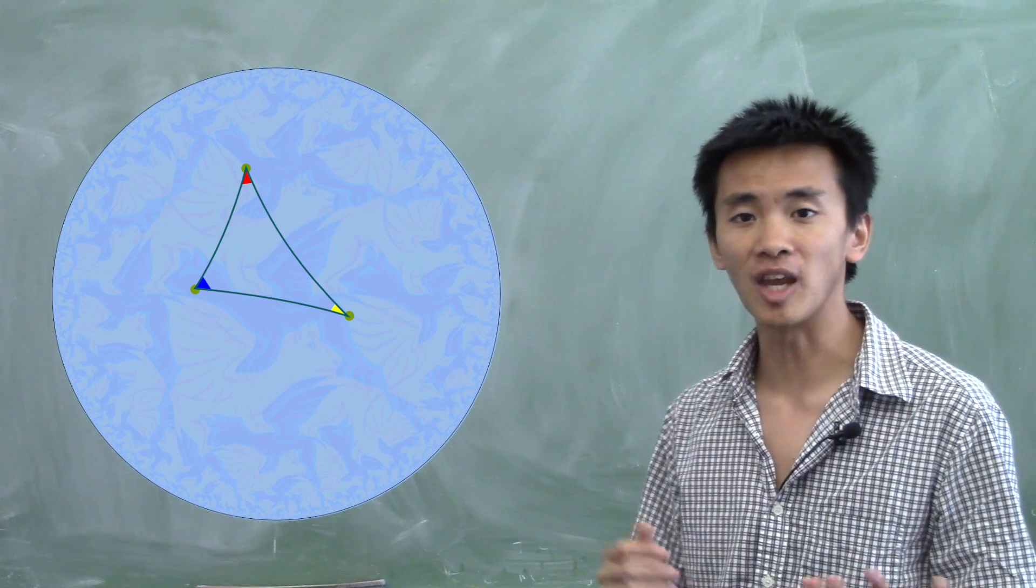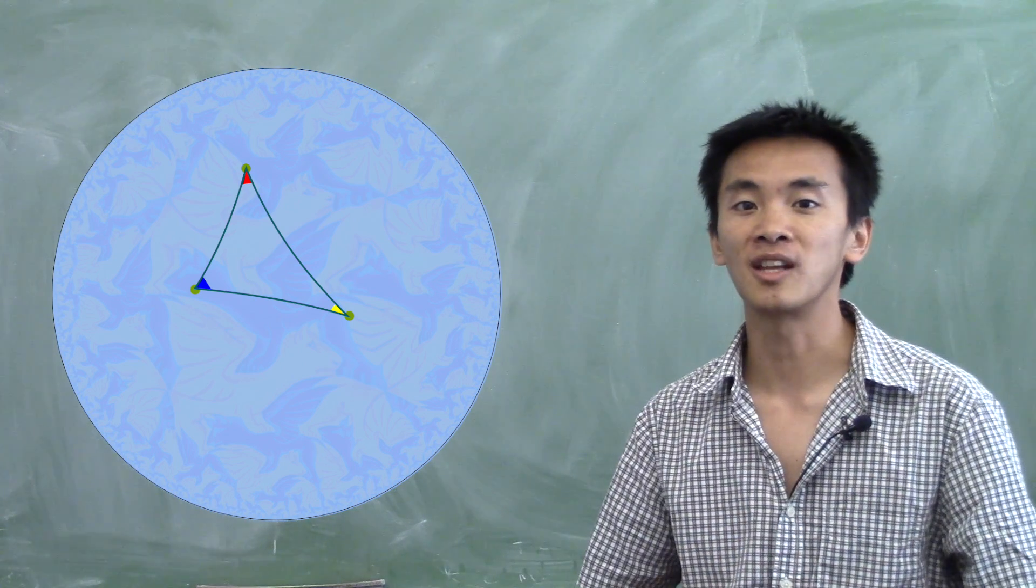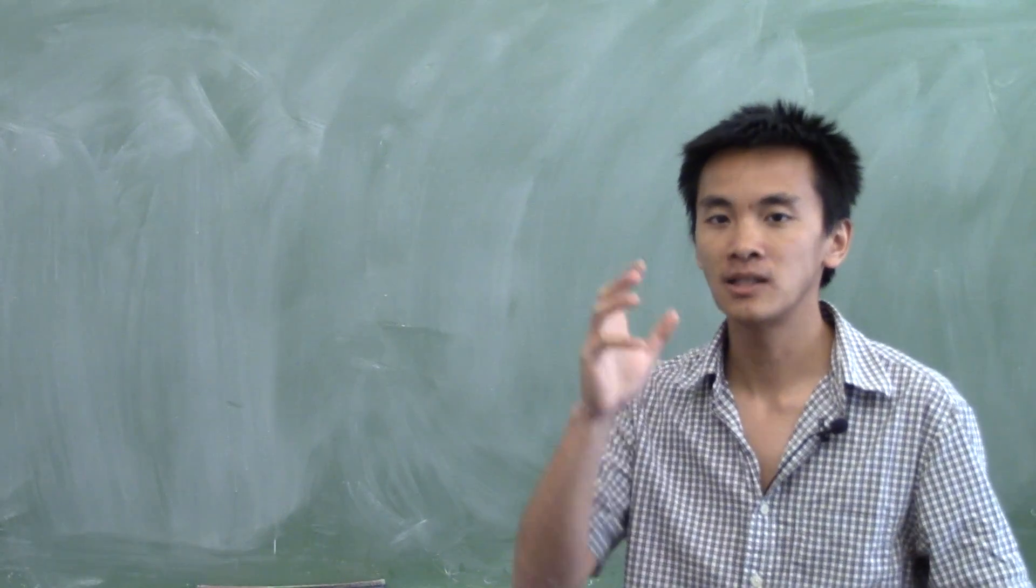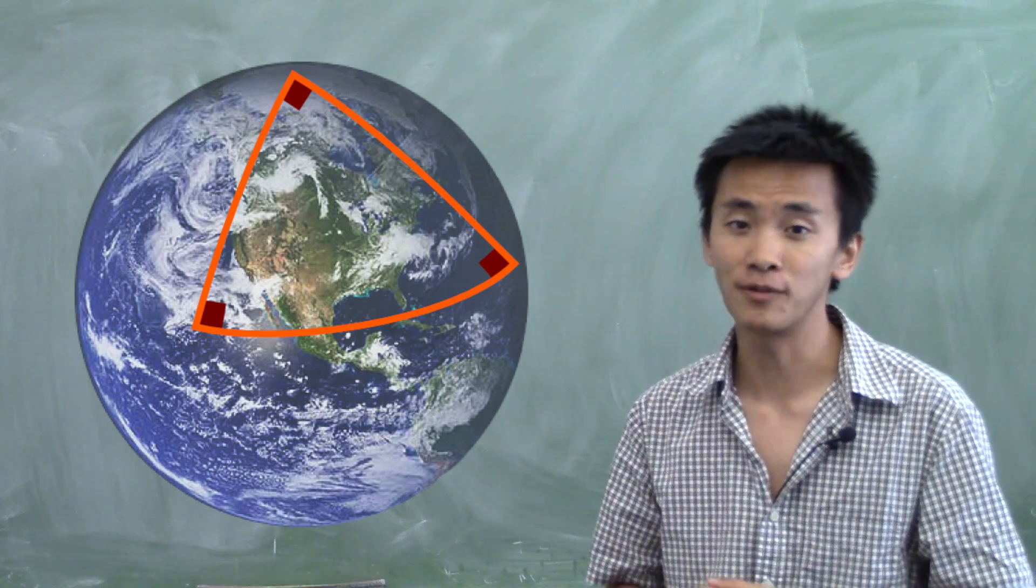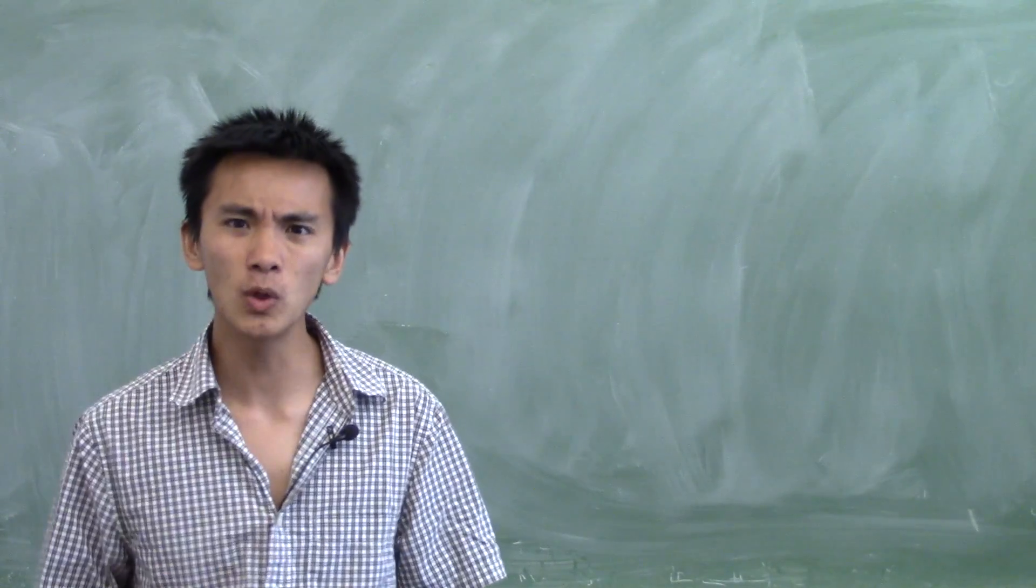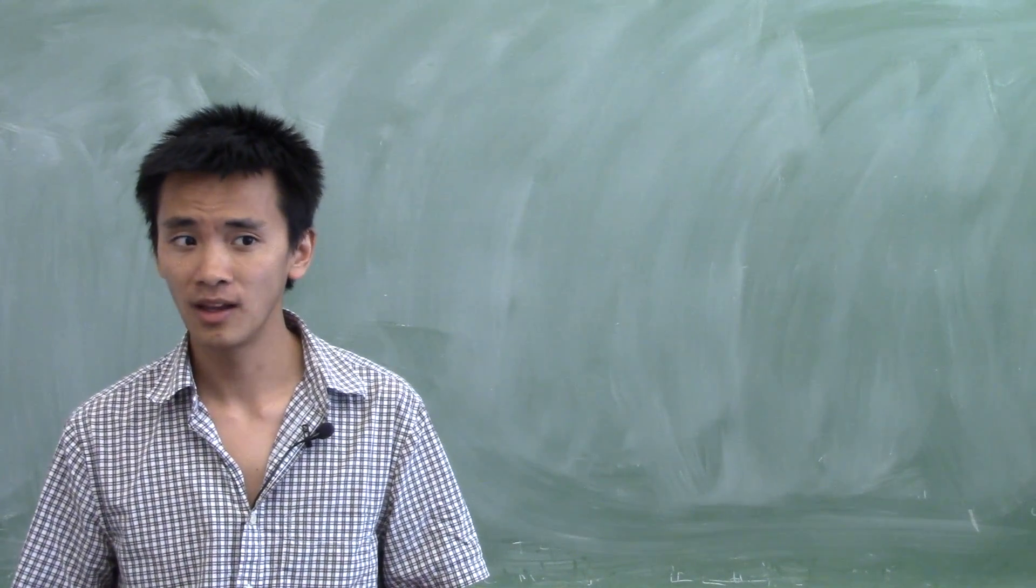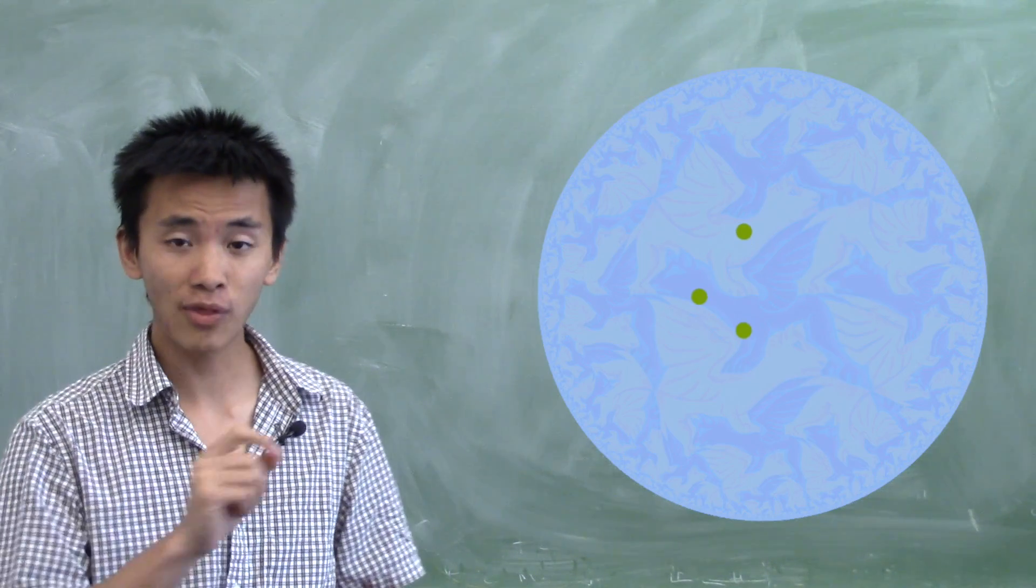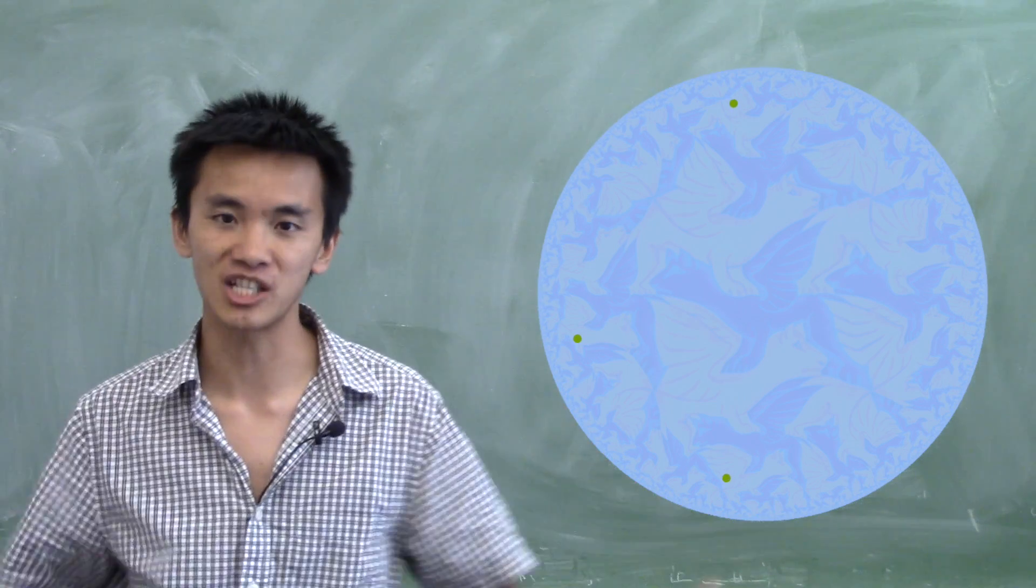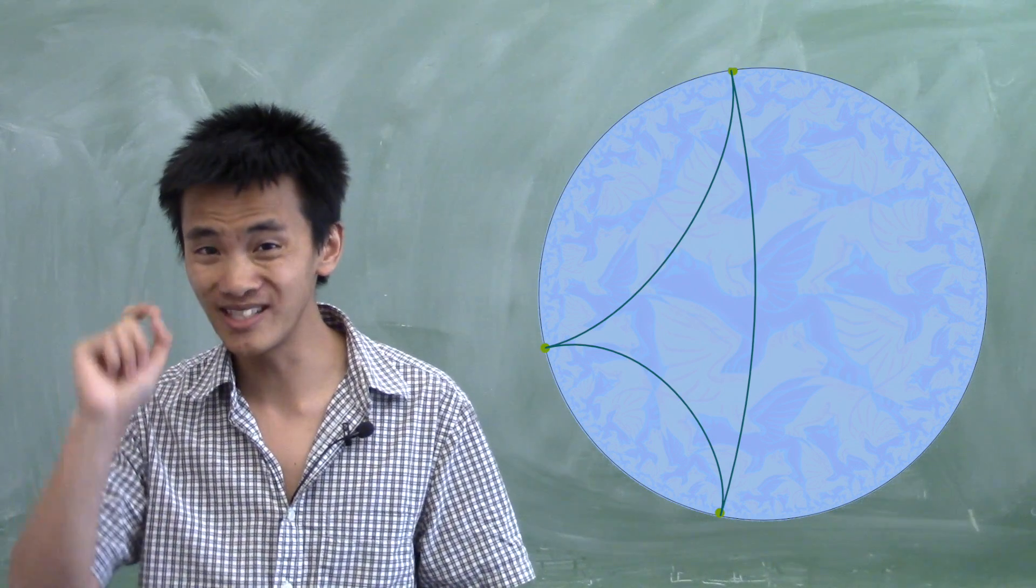Once again, it's kind of the opposite of what's happening in spherical geometry, where the sum of the angles of triangles always exceed 180 degrees. So how small can the sum of the angles of a triangle be on the hyperbolic plane? Well, if you just throw the three corners at infinity, you're trying to make the triangle as large as possible, then the angles will actually go to zero.